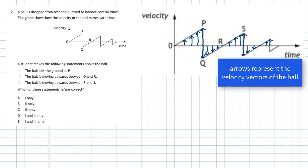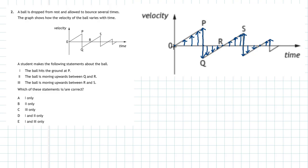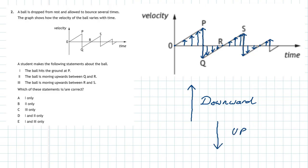We know the ball is falling down between O and P, so the convention here is this: if a velocity vector points upward on the graph, by this convention the object is actually moving downward. And likewise, if the vector points downward on the graph, the ball is actually moving upward. Between O and P we can see all the velocity vectors pointing up the way, so the ball is moving downwards.